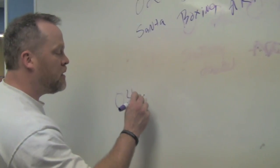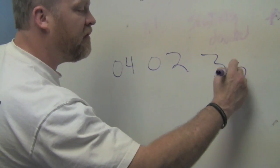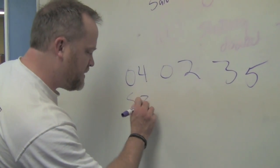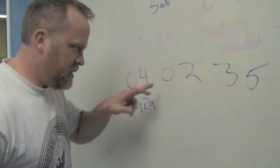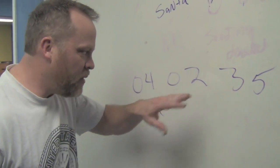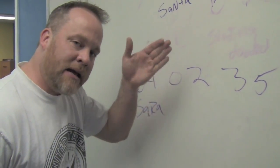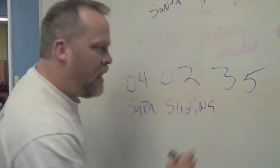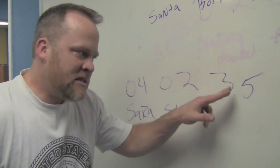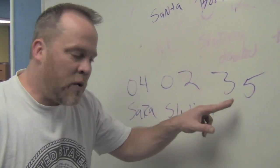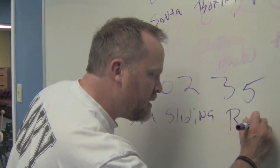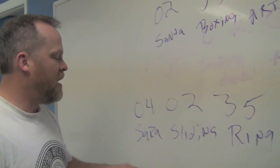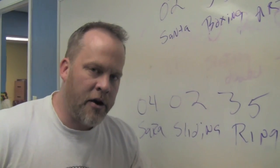Let's do one more: 0-4-0-2-3-5. Zero-four is Sarah, so since it's first in the sequence we take the person. The second one is Santa — we take the verb since it's second: sliding down. The last one is Muhammad Ali, and since it's last we take the noun: in a ring. So 0-4-0-2-3-5 is Sarah sliding in a ring. This is Character Action Object.